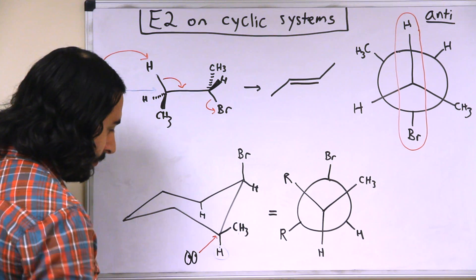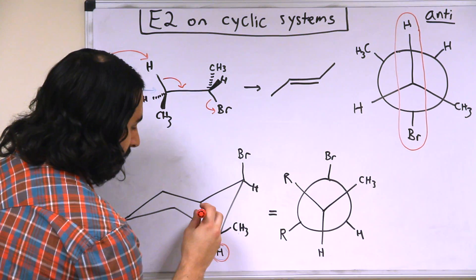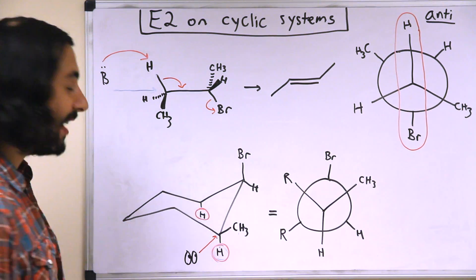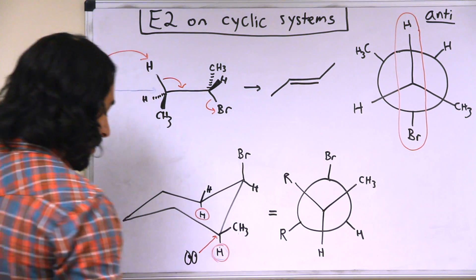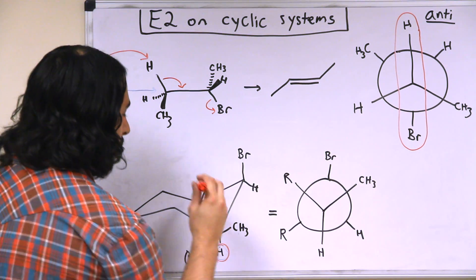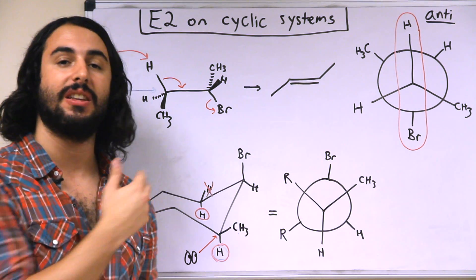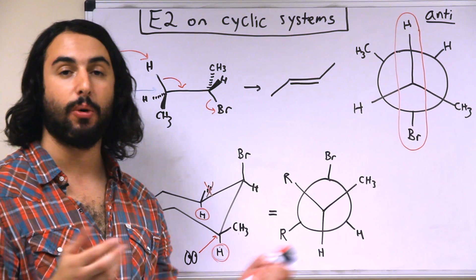So this hydrogen and this hydrogen are available for elimination, but the other hydrogen on this carbon is not going to work. So it is no longer the case that these two equivalent protons are both available for elimination.